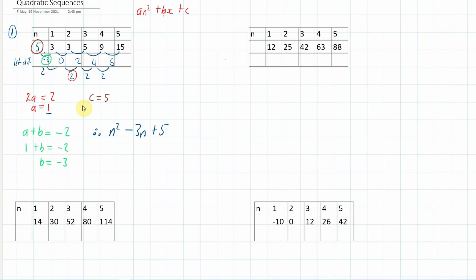Let's apply the same logic again. We're going to do our first difference, and then our second difference, and see where we get to. The first differences are 13, 17, 21, and 25, which means that our second differences are all four, four, and four.